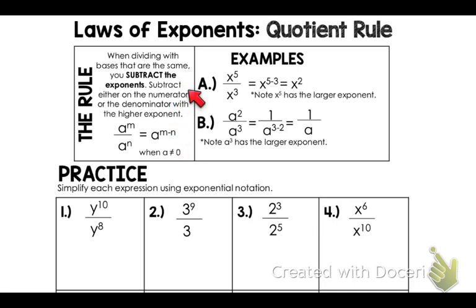To avoid getting a negative number, I want you to make sure that when you subtract, you subtract on the numerator or the denominator with the higher exponent. If you don't do it that way, you'll end up with a negative exponent, and you'd have to apply the negative exponent rule, which we haven't learned yet.